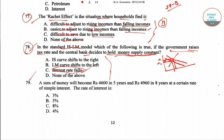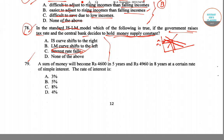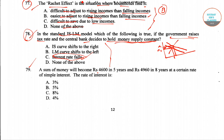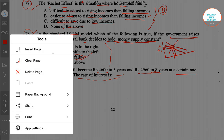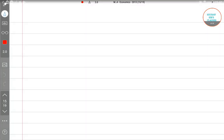Now we will come to the next question, which is question number 79. A sum of money will become 4600 in five years and 4960 in eight years at a certain rate of simple interest. We have to find the rate of interest from the four given options.